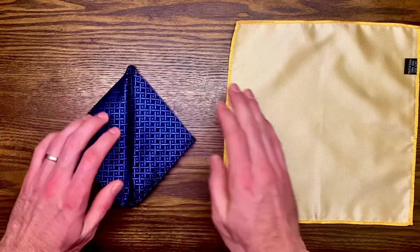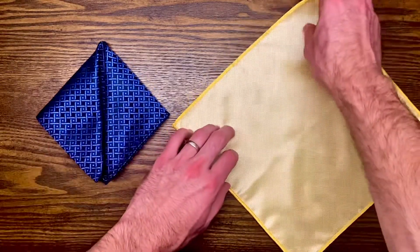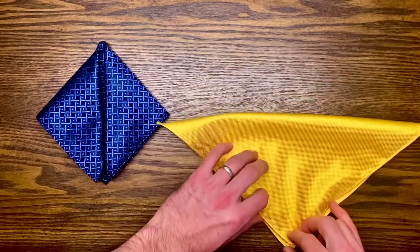Set that to the side, and you'll start the second square the same way. Fold the top corner down to the bottom.